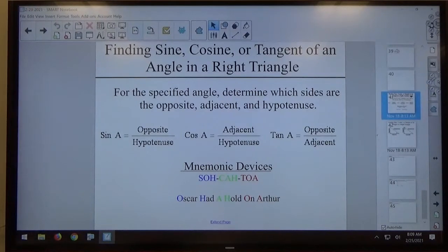All right, so before we get to example one, let's take a look at your sine, cosine, and tangent ratios in a right triangle. Sine, cosine, and tangent are simply ratios of two sides of a right triangle for a given acute angle in that right triangle.